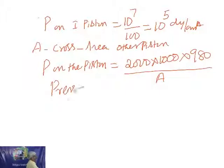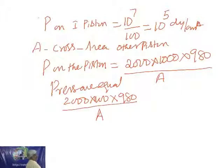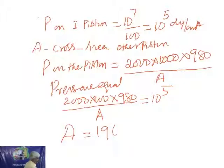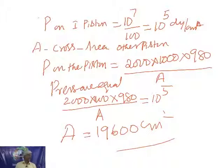Therefore: 2000 into 1000 into 980 divided by A equals 10 power 5. From which A can be calculated as 1,96,000 cm squared. In MKS, if all are in MKS system: area in meter squared, so divide by 100 — A equals 196 meter squared. Be careful about units: if all are in CGS we cannot mix; if any parameter is in MKS, convert everything to one unit.